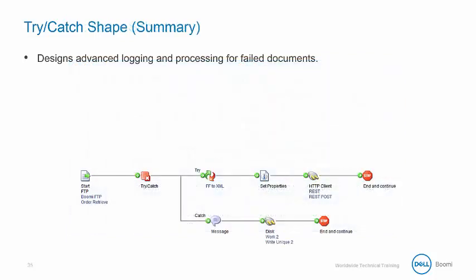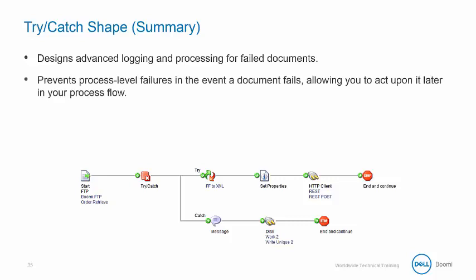The logic of the try-catch allows you to design advanced logging and processing for failed documents, because the original document and its properties are sent down the catch path. The try-catch shape is able to prevent process-level failures in the event a document fails, allowing you to act upon it later in the process flow.